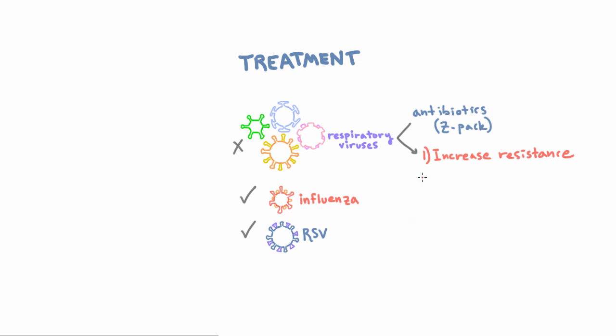Another thing that prescribing antibiotics can do is alter people's microbiomes. A microbiome is all the bacteria that live on or in your body but don't cause disease, and most notably they are all over the GI tract. These bacteria help you digest and help defend you against other infections. So when antibiotics kill those healthy bacteria, that in itself can cause disease.